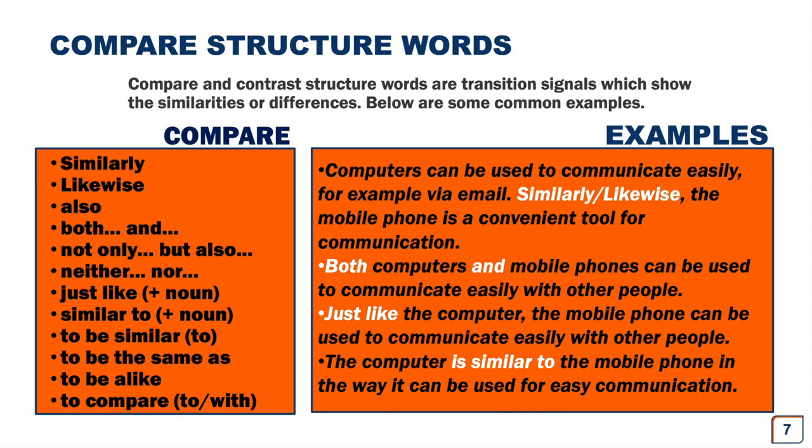Third example: Just like the computer, the mobile phone can be used to communicate easily with other people. Here instead we used just like. On our last example, the computer is similar to the mobile phone in the way it can be used for easy communication. So here we chose to use to be similar to.